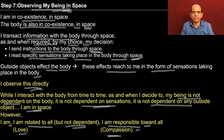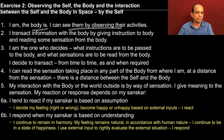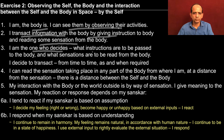When we say that I want to live with continuous happiness, essentially I need to ensure this kind of competence in me. I hope you are able to relate this to your basic aspiration. To sum up all the steps: I am, the body is. I can see them by observing their activities. I transact information with the body by giving instruction to the body and reading sensations from it. I am the one who decides what instructions are to be passed on to the body and what sensations are to be read from the body — it is my decision.